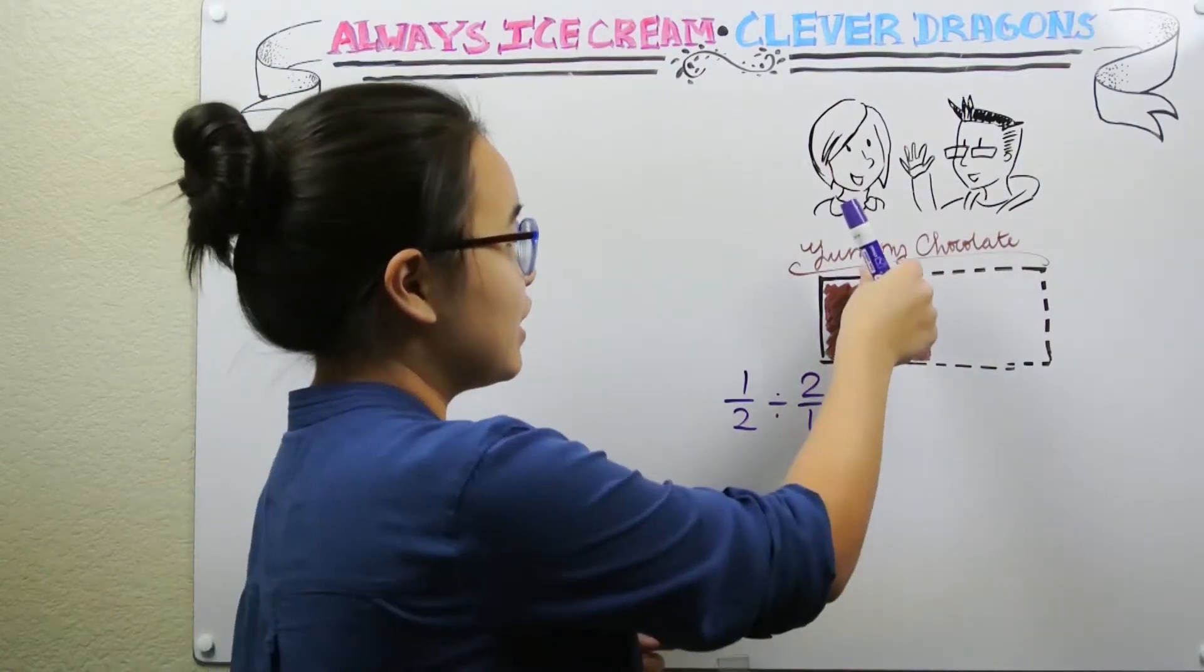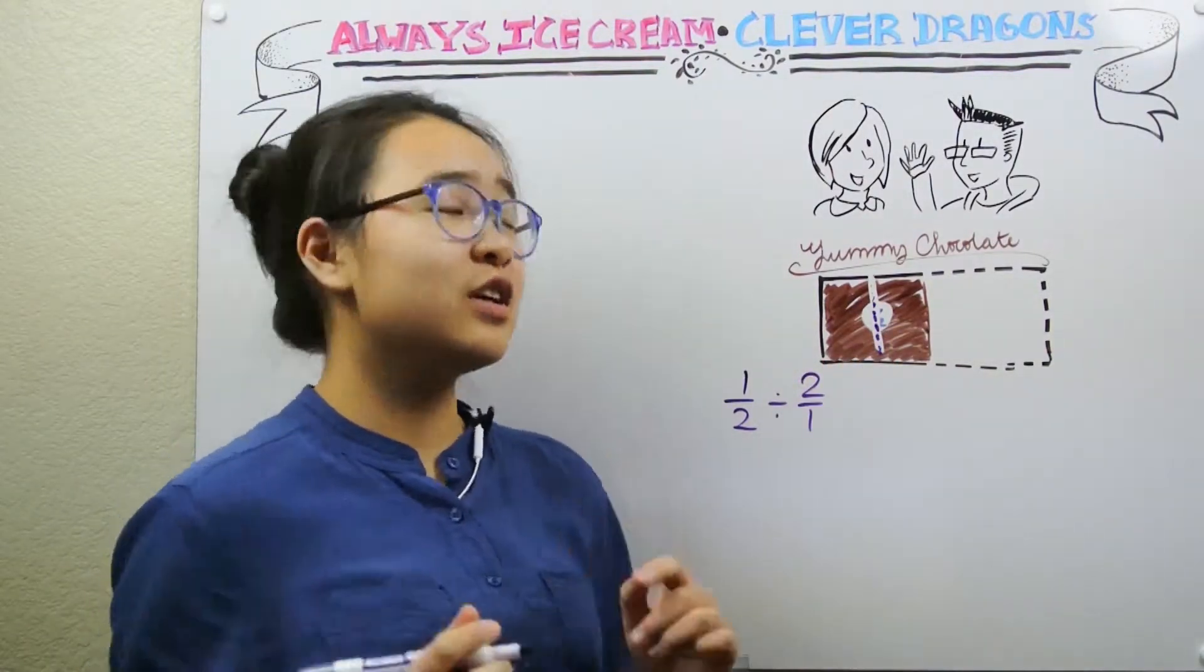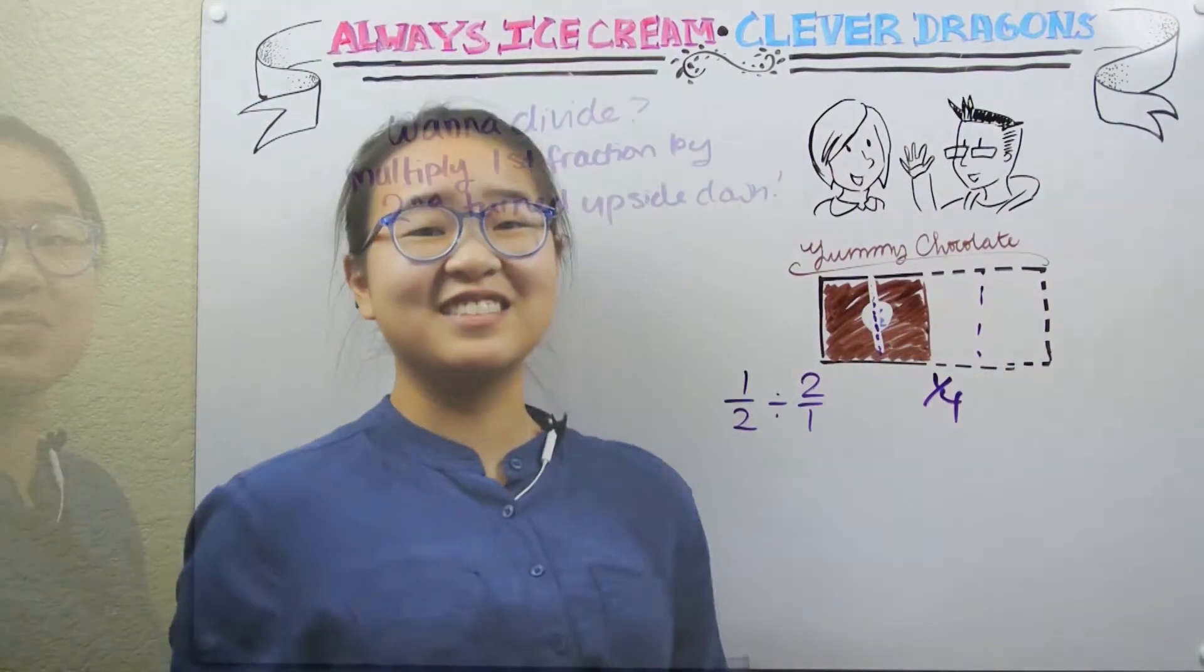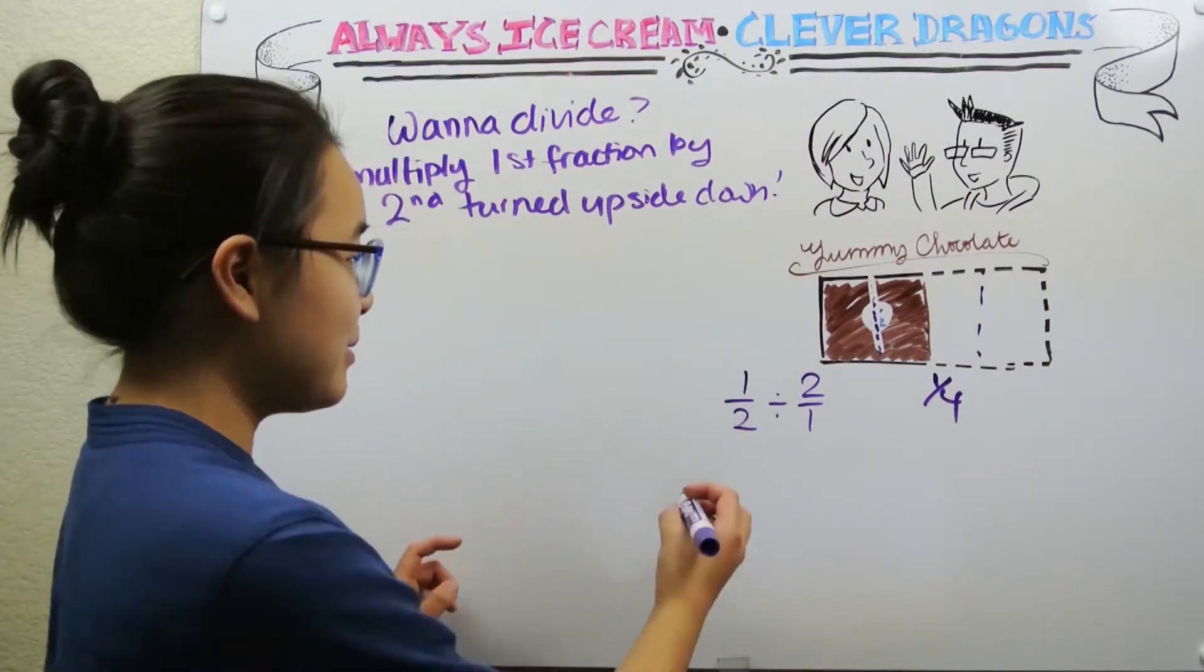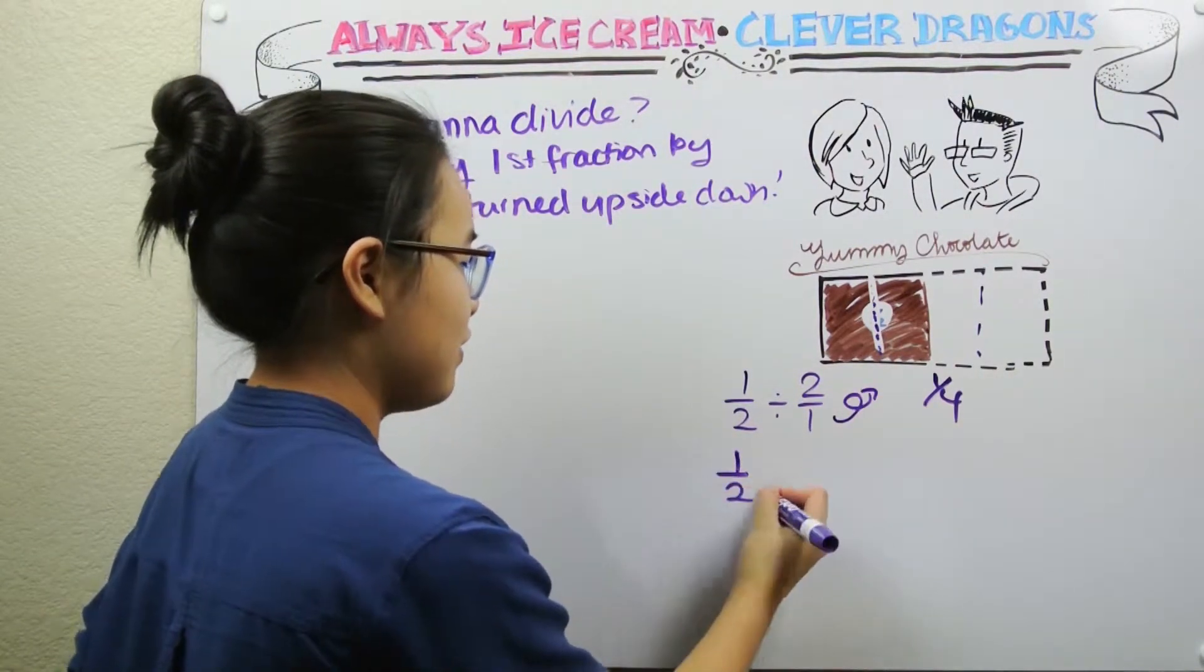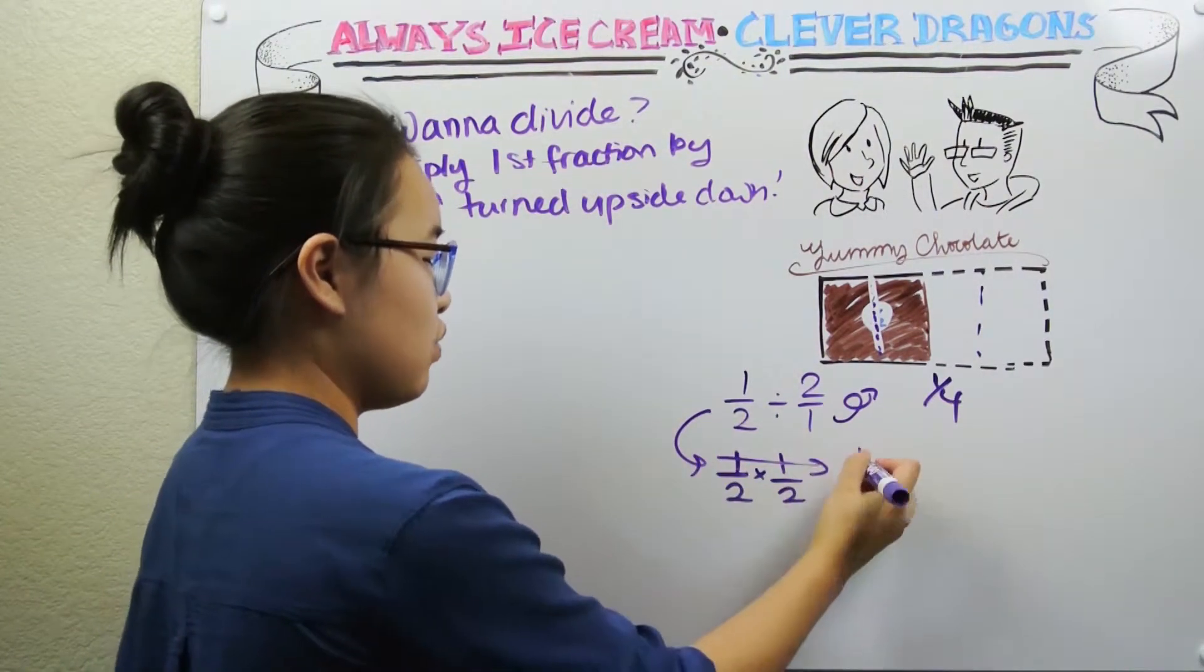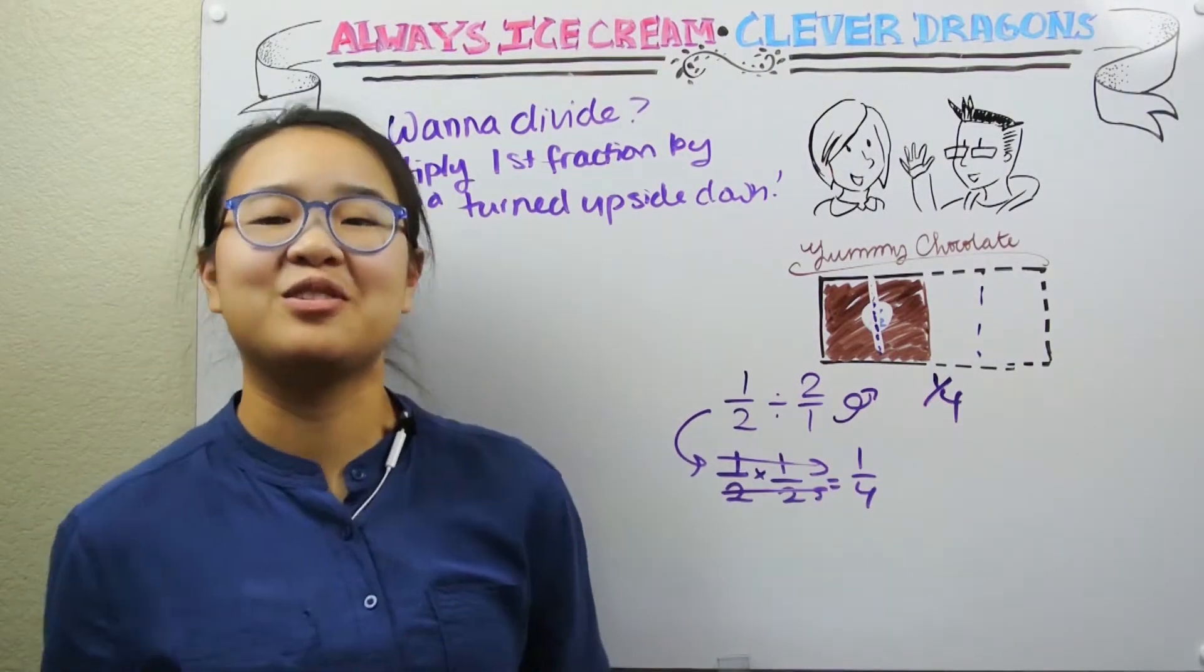What we want to do is divide 1/2 by 2/1 in fraction form, right? And if we cut half of this chocolate bar up into two pieces, you can clearly see that each person is going to get 1/4 of that chocolate bar. Notice that in order for this to make sense, what we're really doing is flipping this upside down, so we get 1/2 and 1/2, and then we're multiplying them. So 1 times 1 is 1, 2 times 2 is 4, and there you go. You got 1/4.